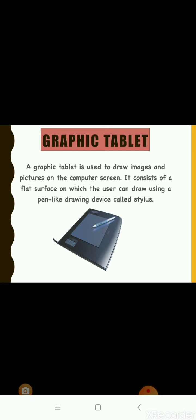A graphic tablet is an input device used to draw images and pictures on the computer screen, in a similar way as you draw pictures with a pencil on paper. A graphic tablet consists of a flat surface on which a user can draw using a pen-like drawing device called a stylus. Graphics tablets are of great use to artists who like to draw directly on the computer.